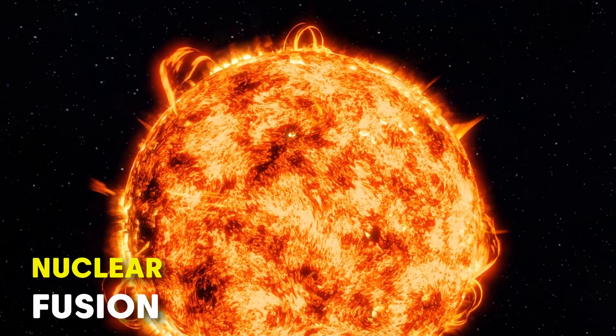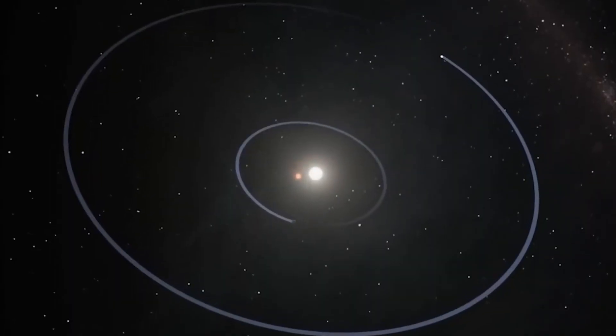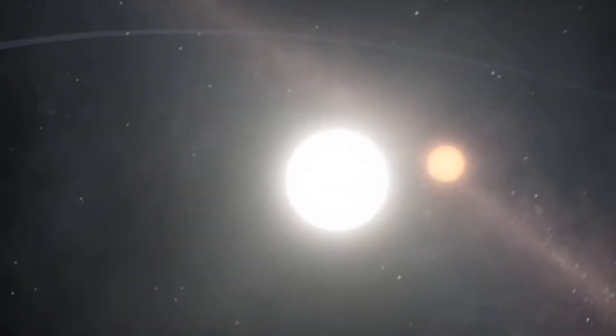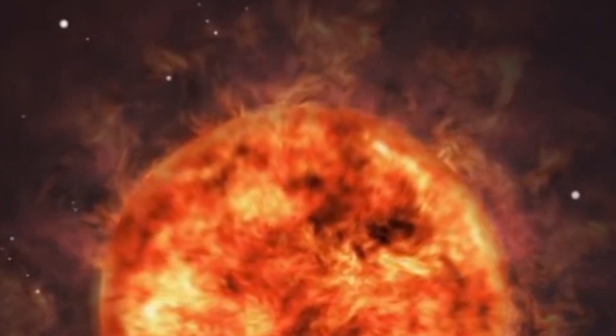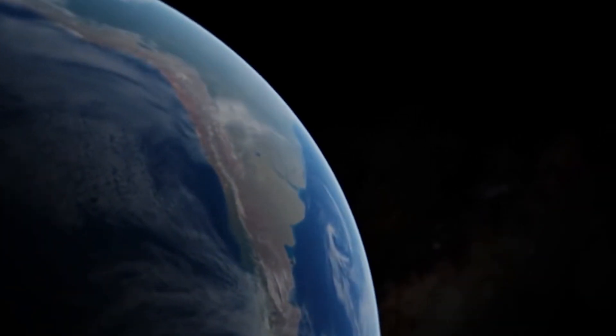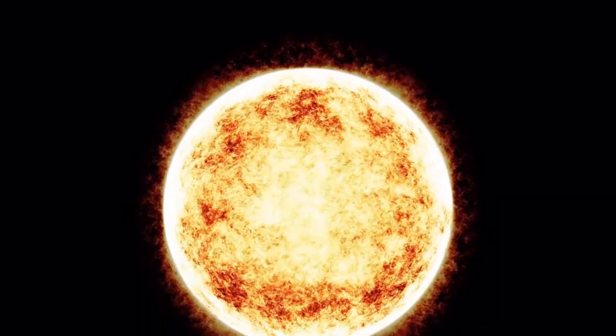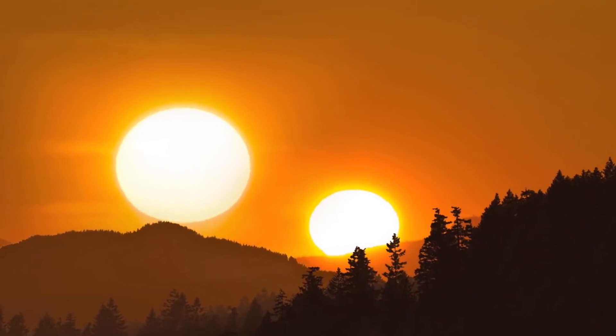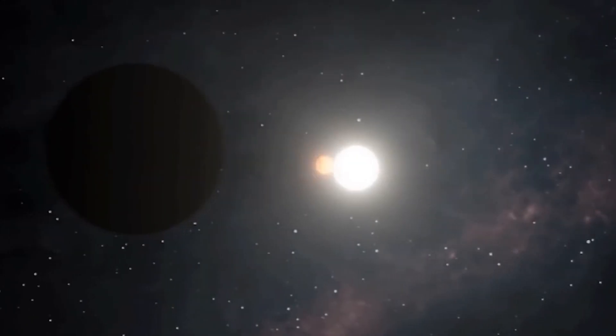Nuclear Fusion: The Sun primarily emits energy through a process called nuclear fusion, where hydrogen atoms combine to form helium, releasing a tremendous amount of energy in the process. If Earth were as large as the Sun, nuclear fusion reactions might begin, turning our once rocky planet into a massive star. While this sounds fascinating, it would spell doom for life on Earth.